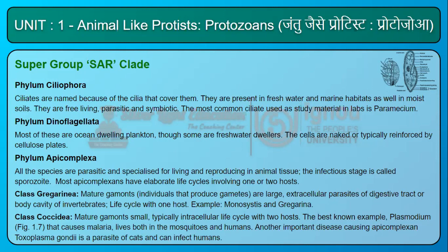Examples include Monocystis and Gregarina. Class Coccidia — mature gamonts are small, typically intracellular, with a life cycle involving two hosts. The best-known example is Plasmodium, which causes malaria and lives both in mosquitoes and humans. Another important disease-causing apicomplexan, Toxoplasma gondii, is a parasite of cats and can also infect humans.